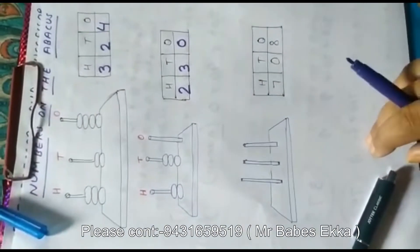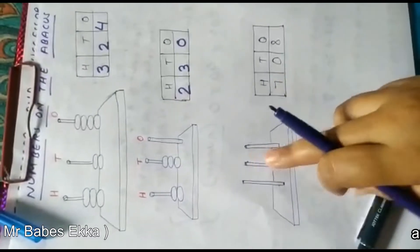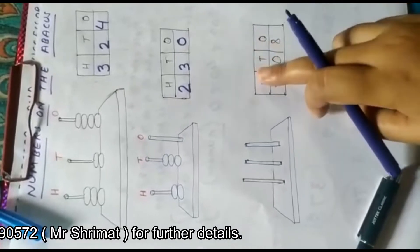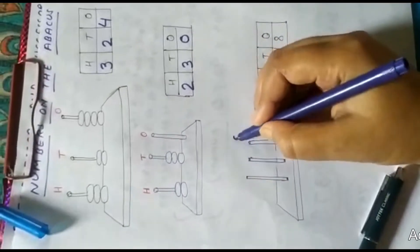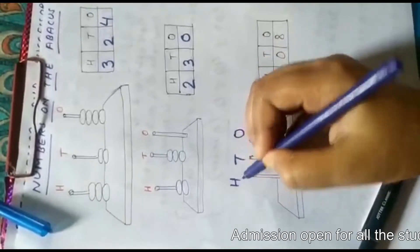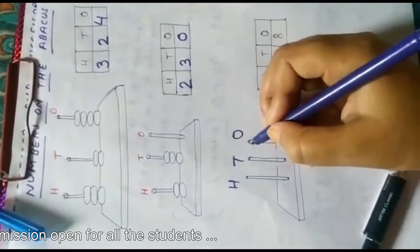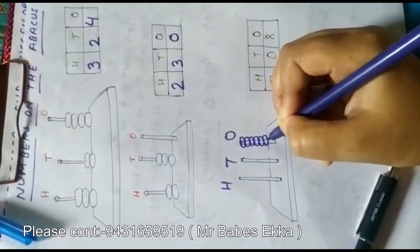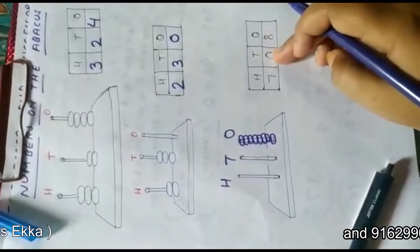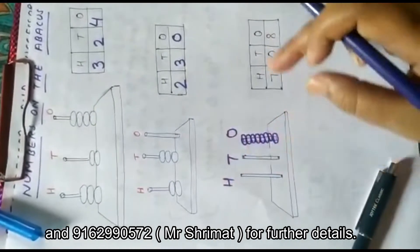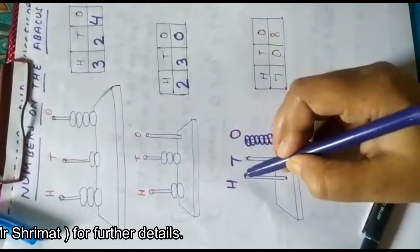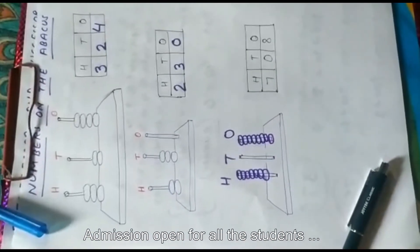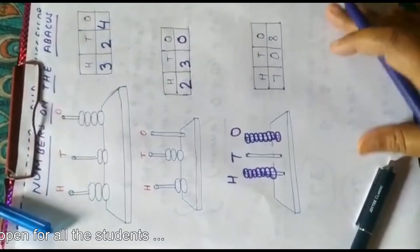The second way of solving abacus questions: here the beads are not drawn but you are given that ones has 8, tens has 0, and hundreds has 7, and you have to draw the beads. Ones rod has 8 beads, so draw 8 beads: one, two, three, four, five, six, seven, eight. Tens rod has zero, so we will not draw any bead on the tens rod. Hundreds rod has 7 beads: one, two, three, four, five, six, seven.